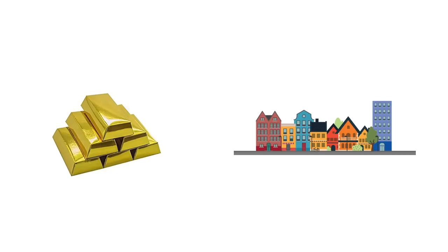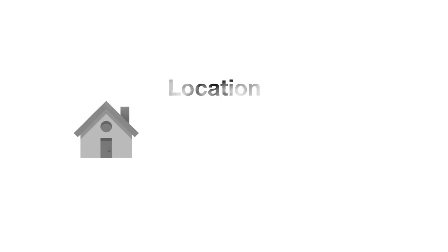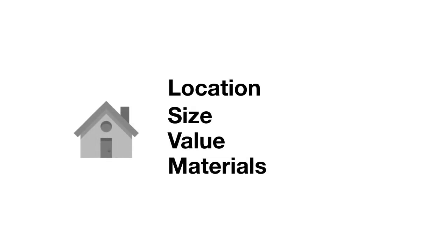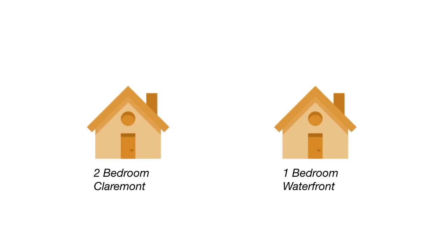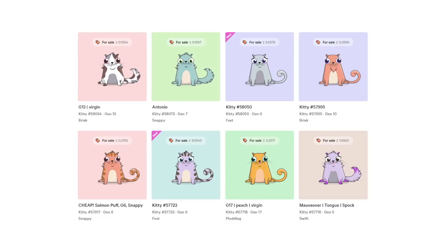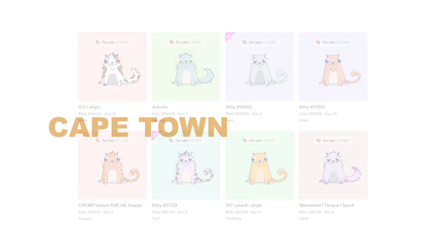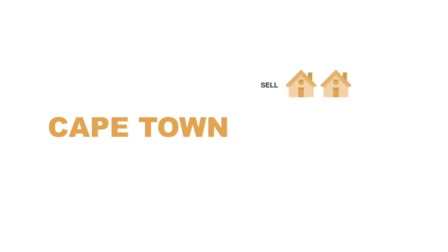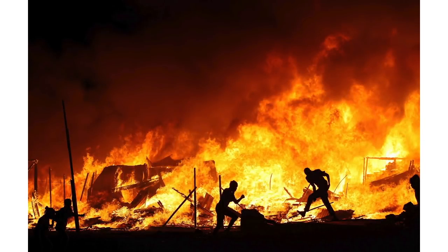Houses are non-fungible — they can have different locations, sizes, values, and materials. A two-bedroom house in Claremont is not the same as a one-bedroom apartment at the waterfront. One of the first non-fungible tokens on the blockchain were CryptoKitties, and the reinsurance market could look quite similar. An insurer in Cape Town could go to the site, sell some contracts for houses they've insured in Cape Town, and buy insurance contracts from Mexico City and Rio — doing this to get independence of risk so a great fire doesn't financially ruin them.